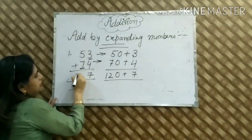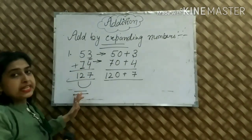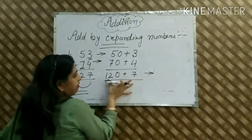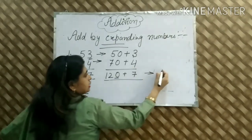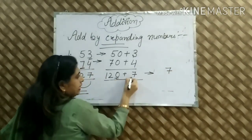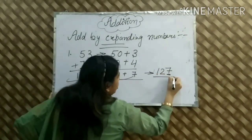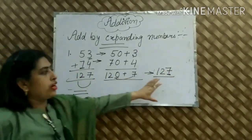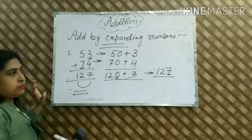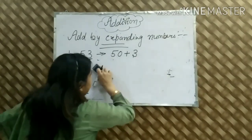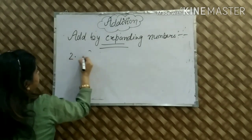So 5 and 7 is 12. In the same way, 3 and 4 is 7. That is how we add 2-digit expanding numbers. Next we have 3-digit numbers to solve in expanded form.